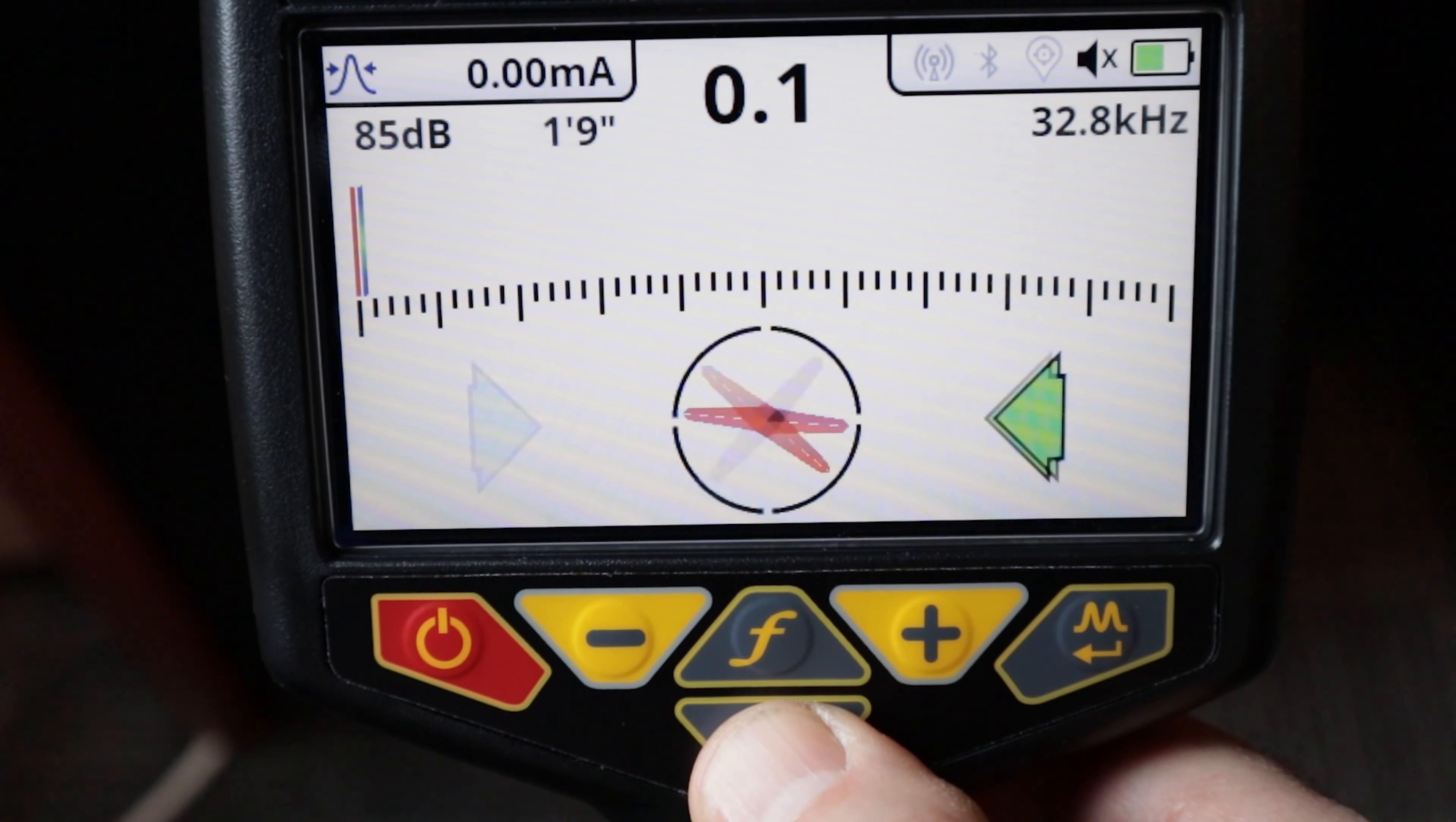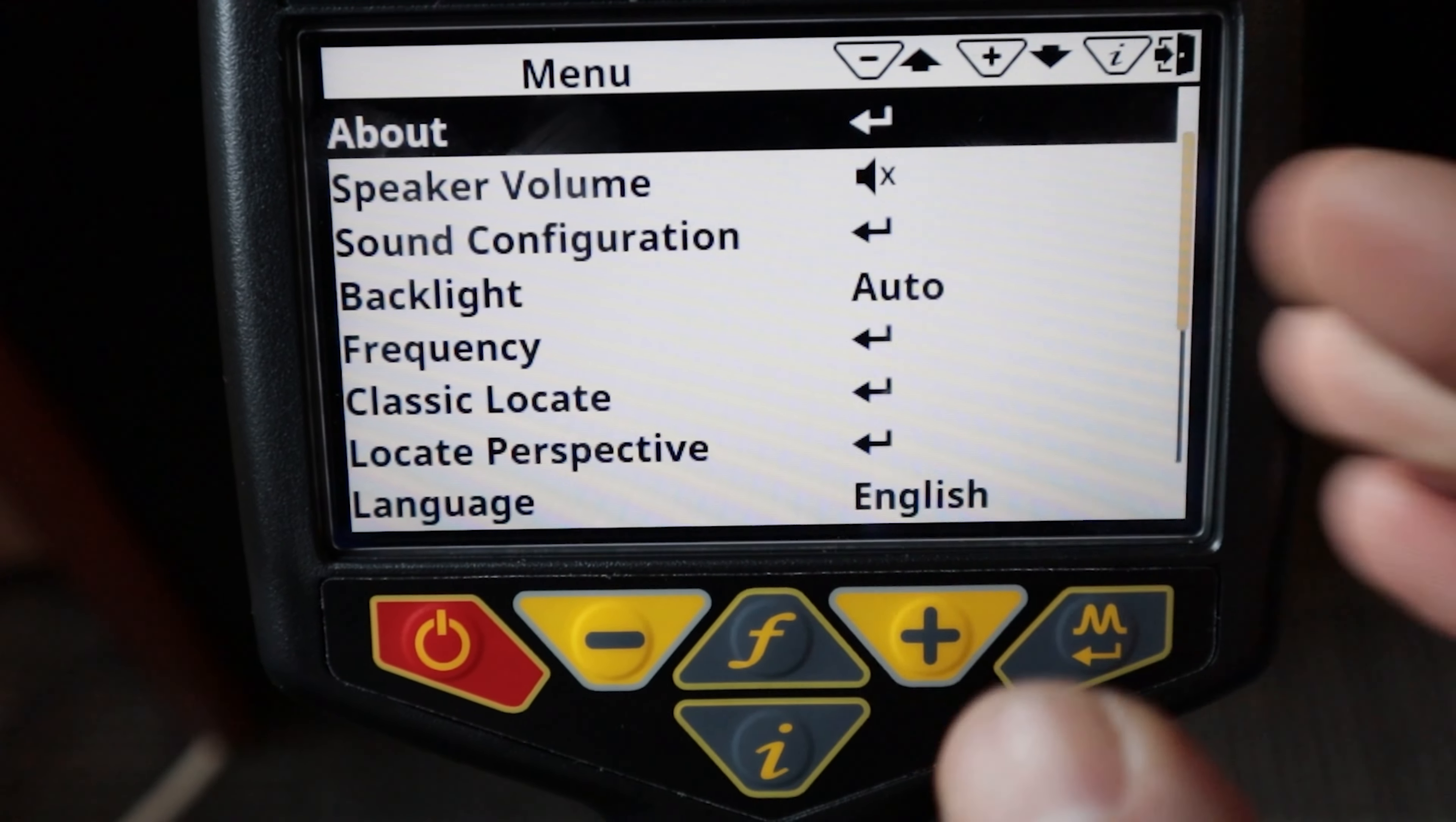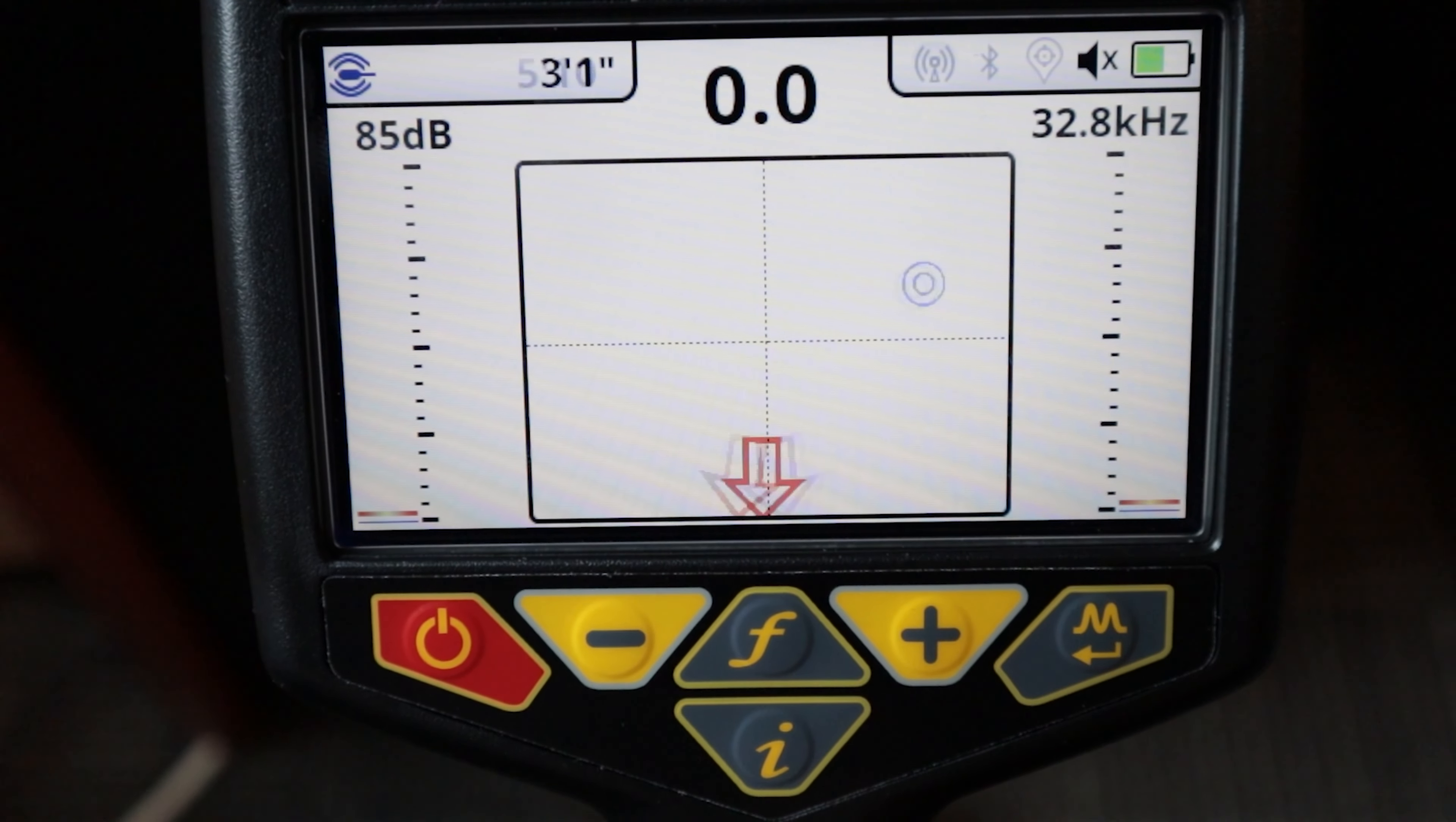Down below that is my I button, my information button. A quick press of that will get me into my information screen if for some reason the depth wasn't being displayed or my milliamps. I could try and force it to show me that information by a quick press here. Now if I push and hold on that I button we get into our menu here so we can scroll through the menu. Let's go back to our locate screens. If I push and hold on this M button I will actually scroll through the locate screens that I have turned on.